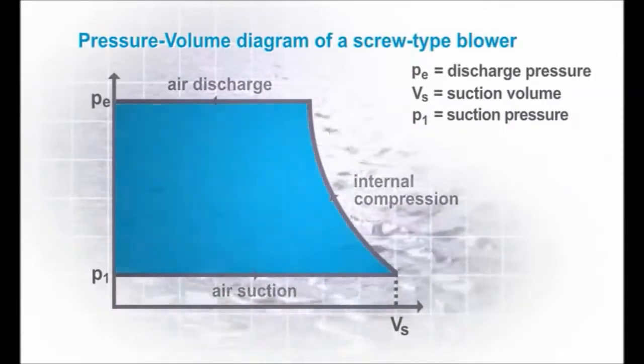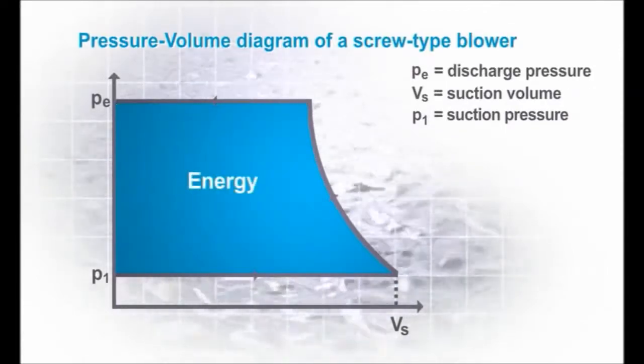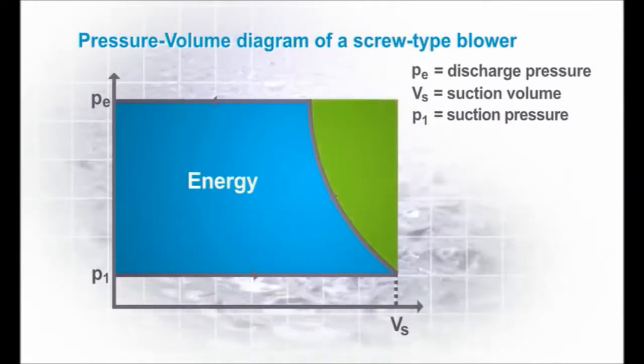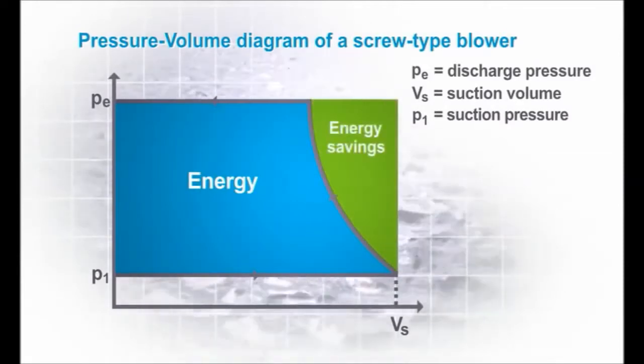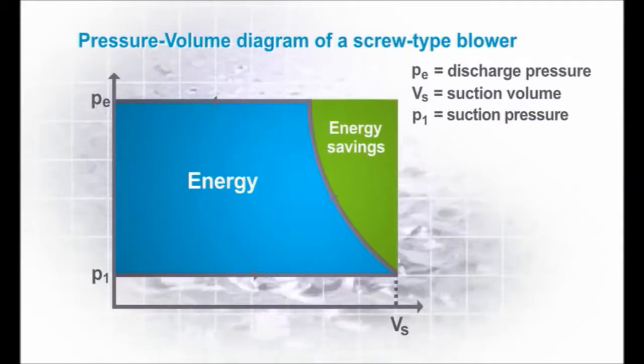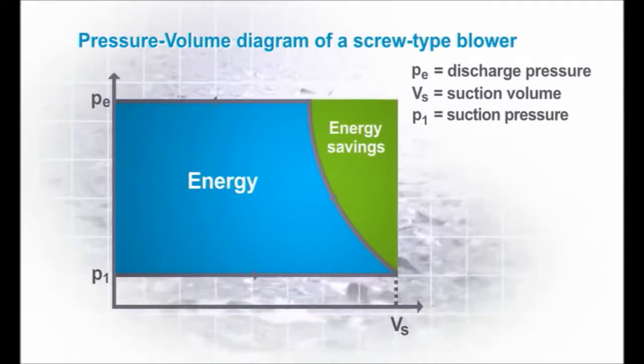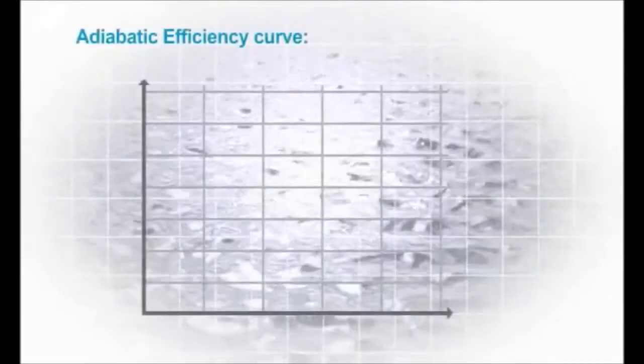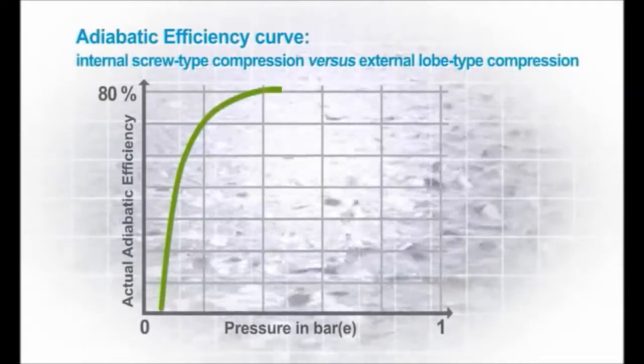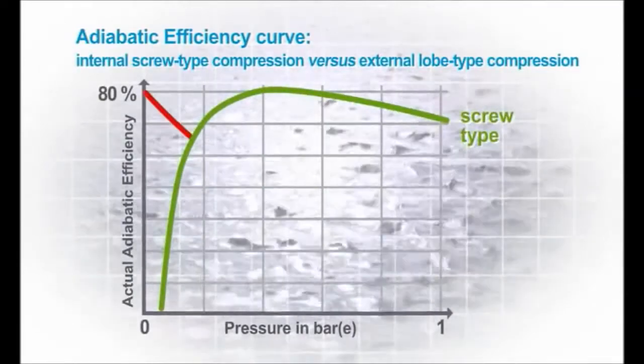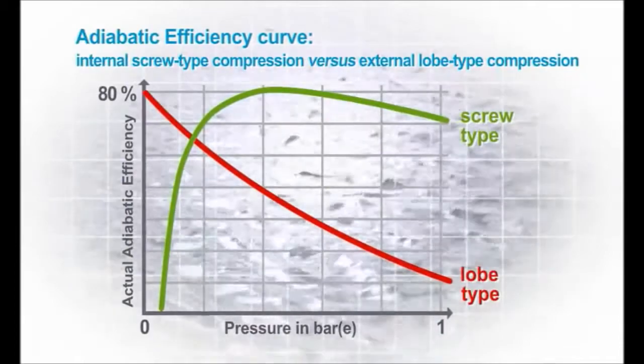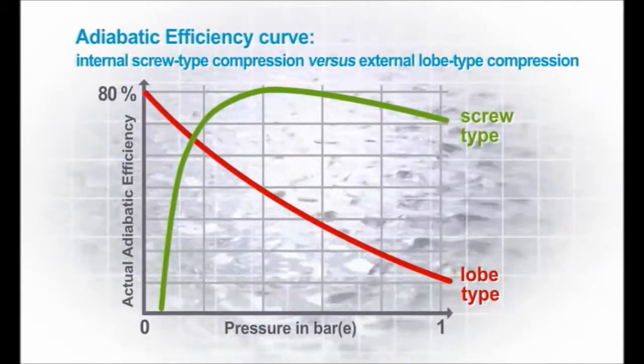The energy saving of a screw blower element versus a roots blower element is shown by the green area in the diagram. In this chart, it's clear to see the effect of the internal compression ratio of a screw element when compared to the external compression of a lobe rotor element.